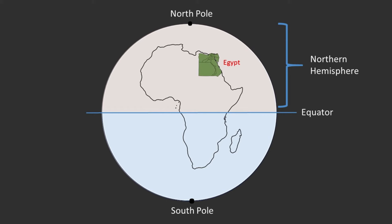The Northern Hemisphere is like the upper half of the Earth. It includes places like North America, Northern Africa, Europe, and Asia. When it's summer in the Northern Hemisphere, it's winter in the Southern Hemisphere, and vice versa. The Northern Hemisphere is separated from the Southern Hemisphere by the equator. Egypt is north of the equator, so it is in the Northern Hemisphere.